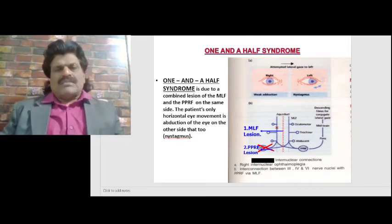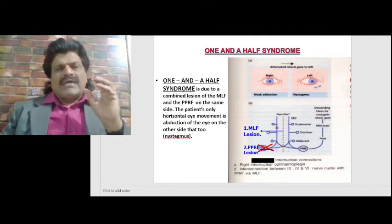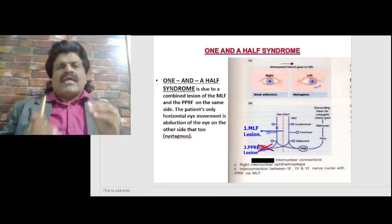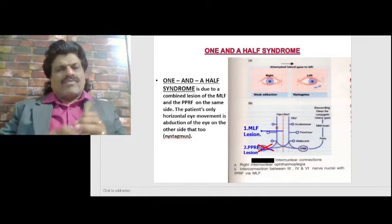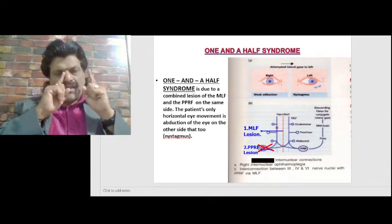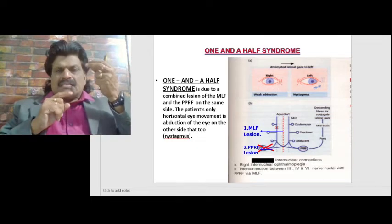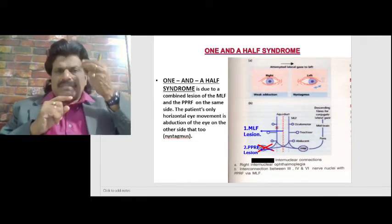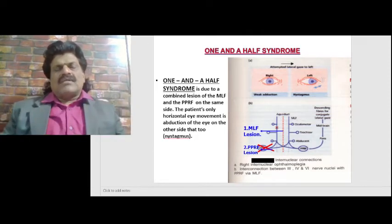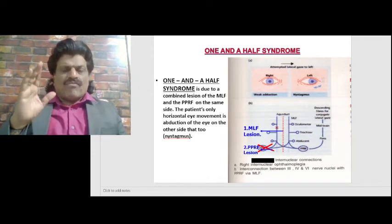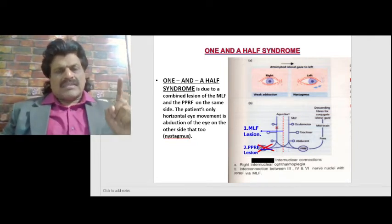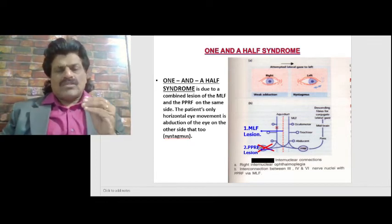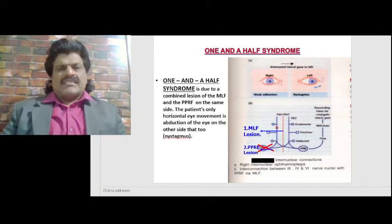With a combined lesion of the PPRF and MLF: PPRF accounts for one movement lost, MLF accounts for half movement lost, leaving only half a movement — hence the name one-and-a-half syndrome. In that remaining half movement there is nystagmus, called abducting nystagmus. This occurs because of Hering's law of equal and dual innervation: the yoke muscles — medial rectus on one side and lateral rectus on the other — receive equal innervation. When the medial rectus is impaired, more compensatory impulses go to the lateral rectus, resulting in nystagmus. So one-and-a-half syndrome is a combined PPRF and MLF lesion with only half a movement remaining, accompanied by nystagmus due to Hering's law.